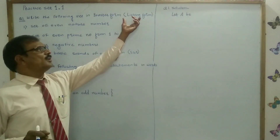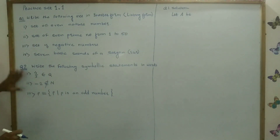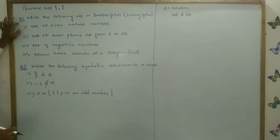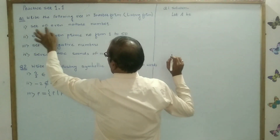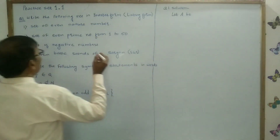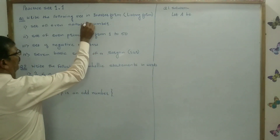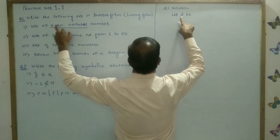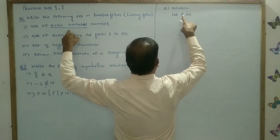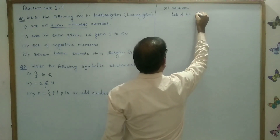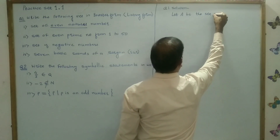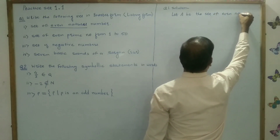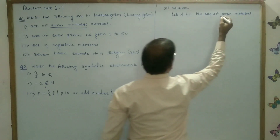Roster form means listing form. So here is our example from set 1.1, question number 1. The first form: set of even natural numbers. Let, in alphabet, capital A or B, be the set of even natural numbers.